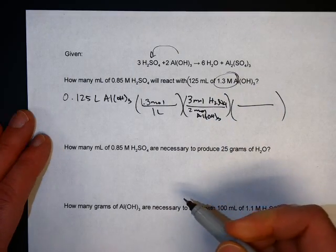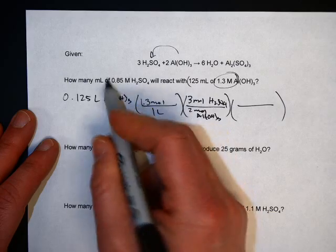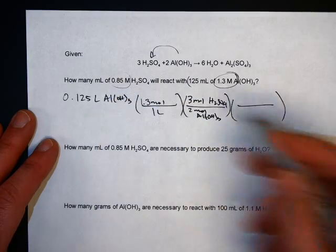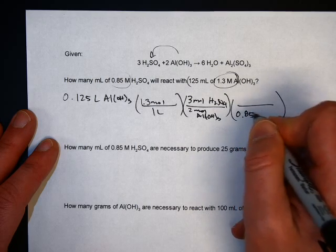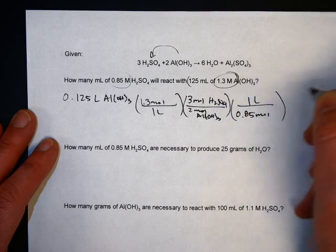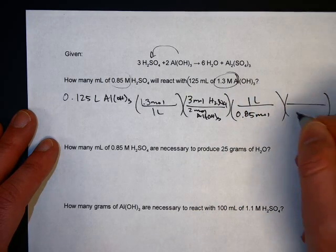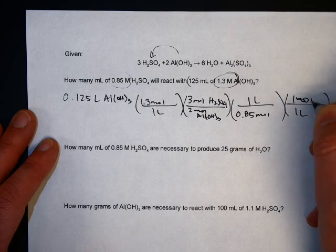You want your answer back in, let's see, milliliters eventually. So liters first, but that's where this comes in. 0.85 molar means 0.85 moles per liter. But you want to cancel out moles, so put it at the bottom here. 0.85 moles in one liter. And then you want your answer in milliliters, so you might as well just tack this on here. There's a thousand milliliters in one liter.